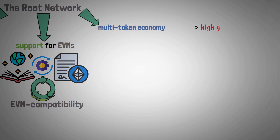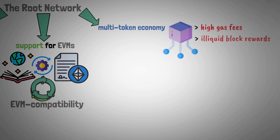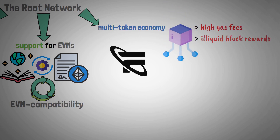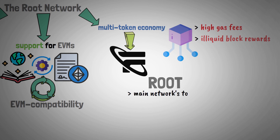To address high gas fees and the demotivating illiquid block rewards for node operators, Futureverse has adopted a multi-token economy. Root, the main network's token, is separated from the gas token.